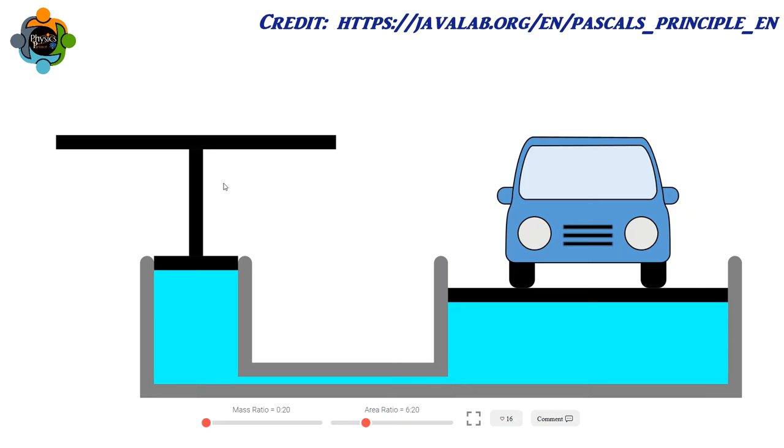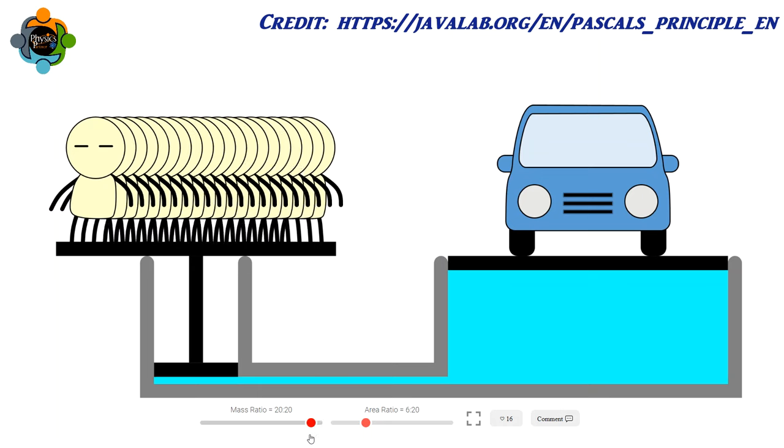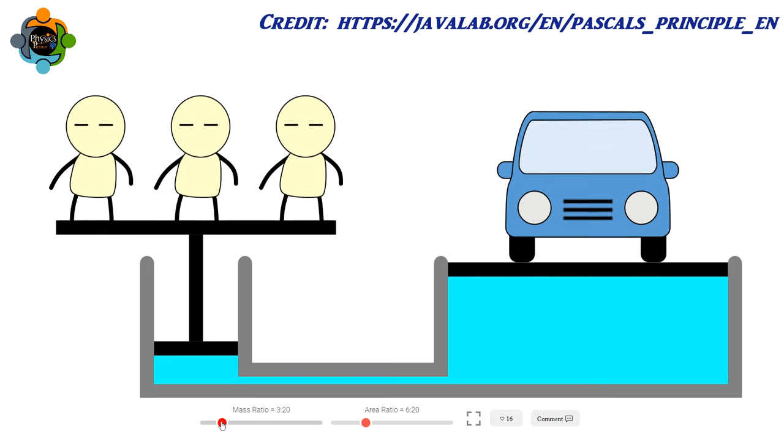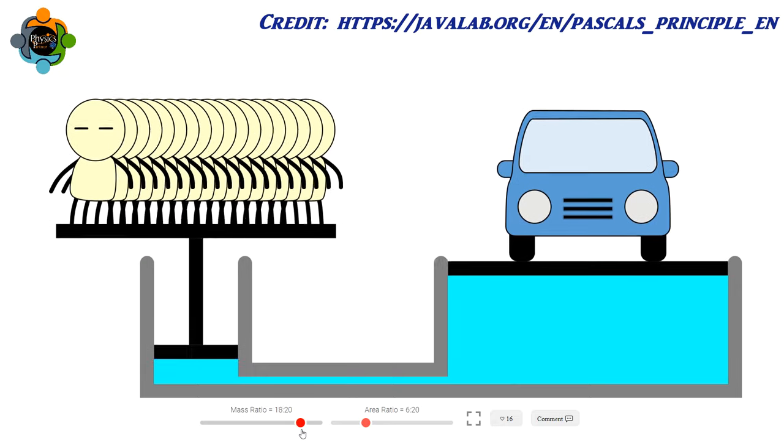To understand this better, imagine a small piston on one side of the cylinder being pushed down by the hydraulic fluid. This creates a force that is transmitted through the fluid to a larger piston on the other side of the cylinder, lifting the vehicle as a result.